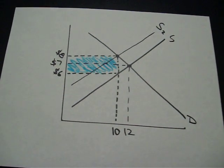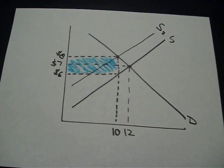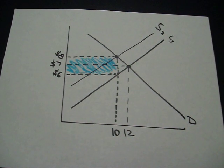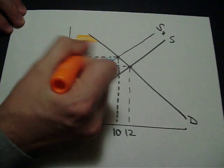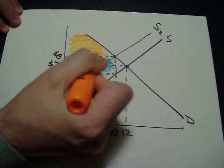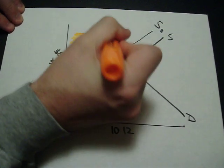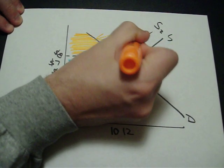Now we want to look at the consumer and the producer surplus. The consumer surplus is the area below the demand curve but above the price that they're paying. So this orange area right here represents the consumer surplus.